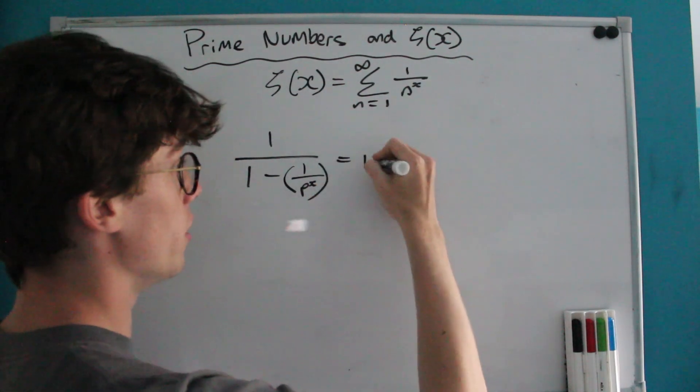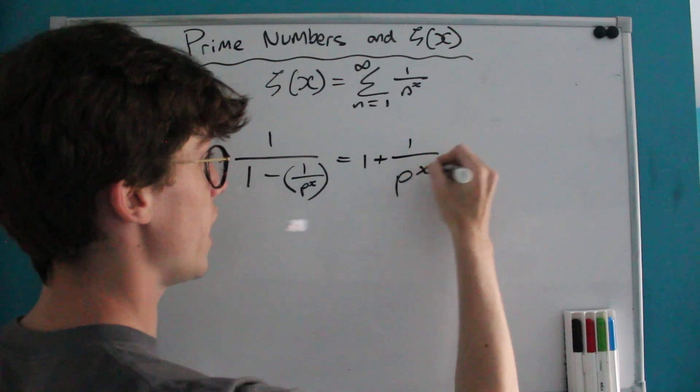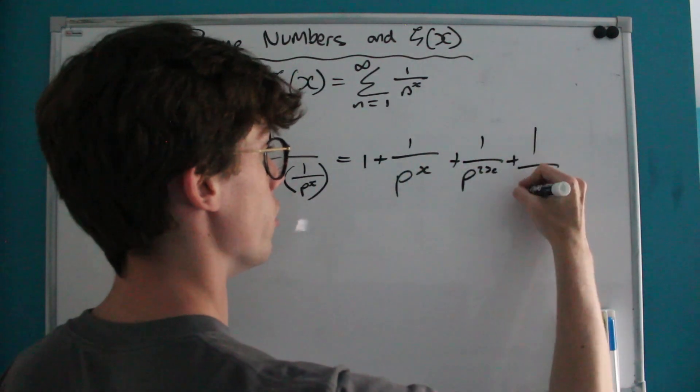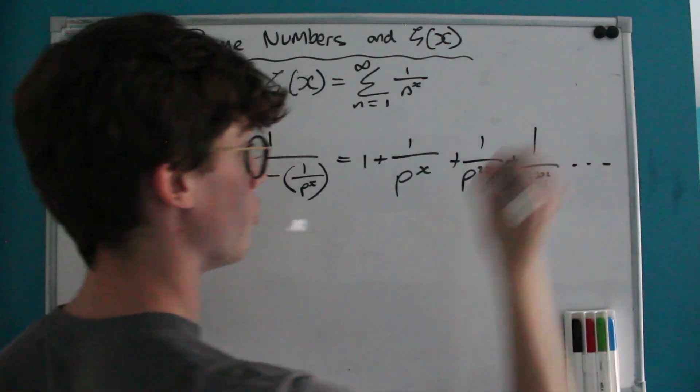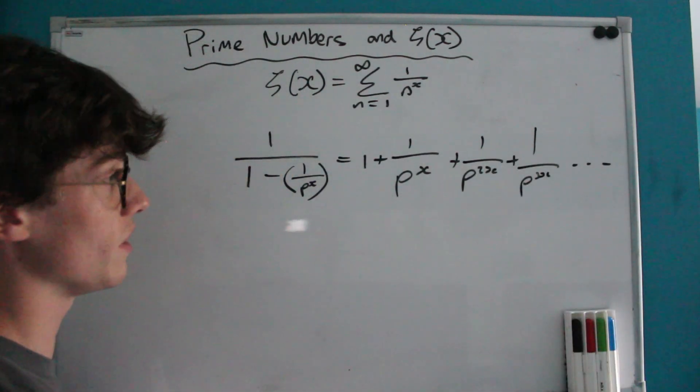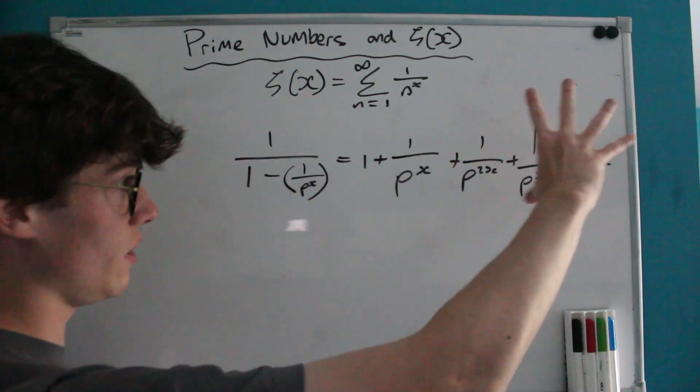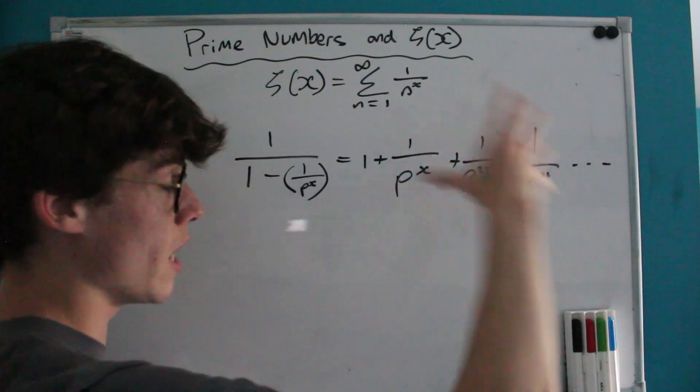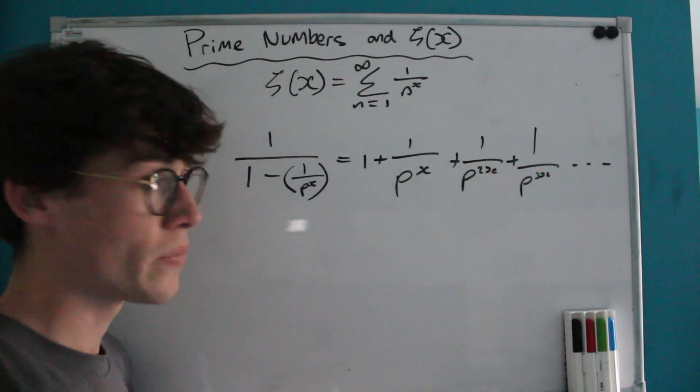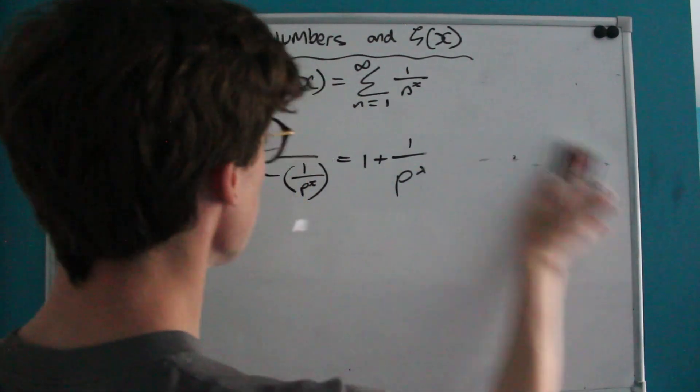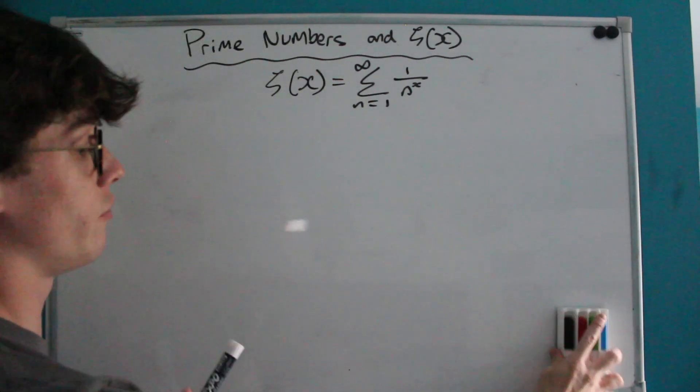So this is going to be equal to 1 plus 1 over p to the x plus 1 over p to the 2x plus 1 over p to the 3x etc. And so perhaps if we were to have these series for each prime and multiply them together, they would expand out in a way that would capture all of our numbers. And to show you what I mean by that I'm going to do it for the first few primes.